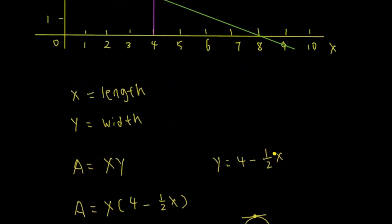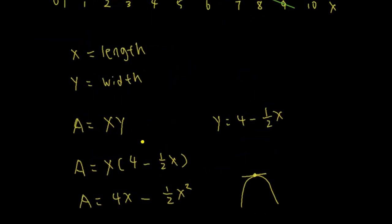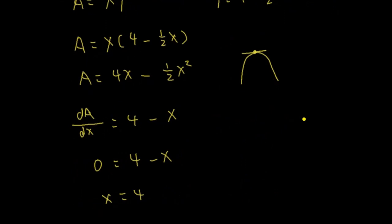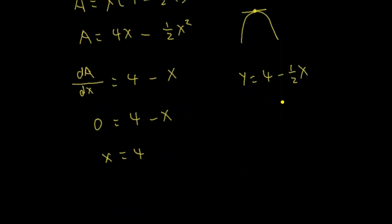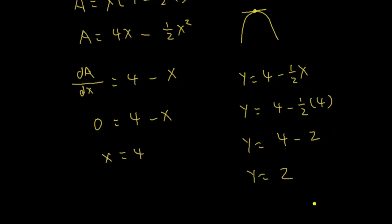We find that x equals 4, which gives the maximum area of the rectangle. Now, what is y? We have y in terms of x, so we plug in x equals 4: y equals 4 minus one-half times 4. Four times one-half is 2, so y equals 4 minus 2, which is 2.